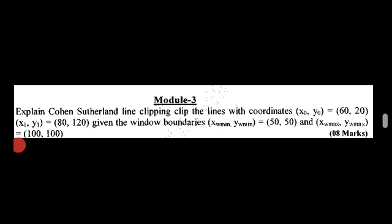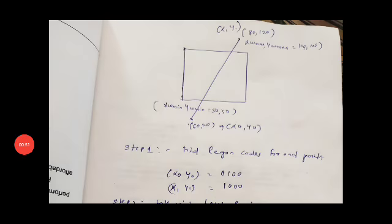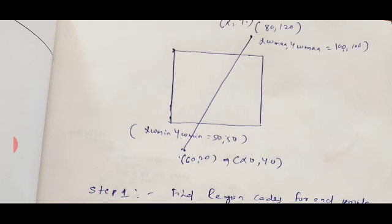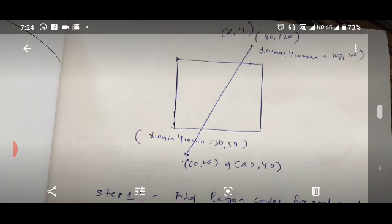We are going to draw this clipping window and clip the line from x0,y0 to x1,y1. With the given details, we can draw the clipping window where xw_min, yw_min is the point (50,50) and xw_max, yw_max is (100,100). The line is drawn with x0,y0 = (60,20) and x1,y1 = (80,120).